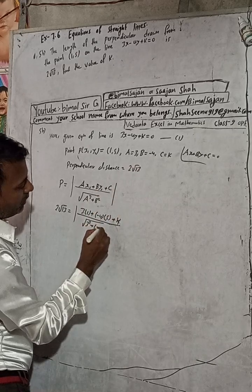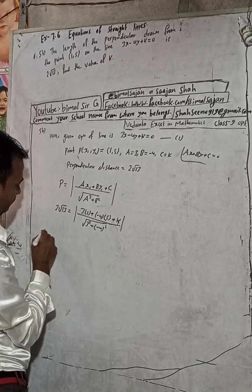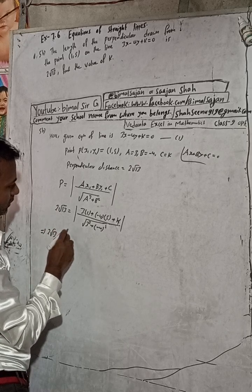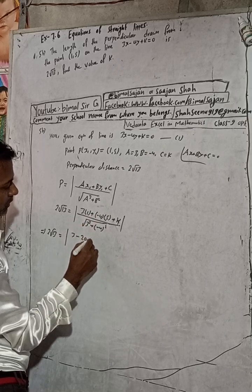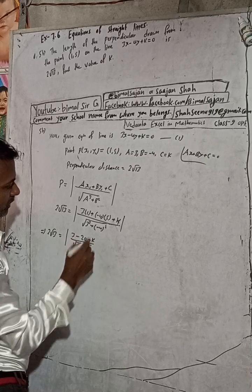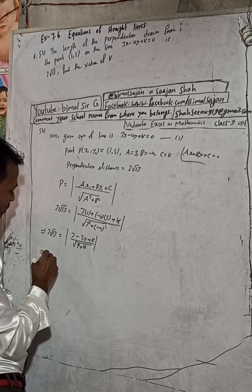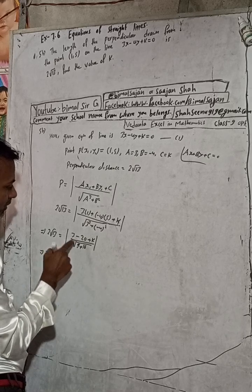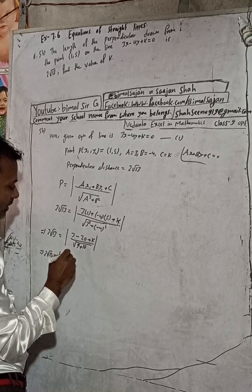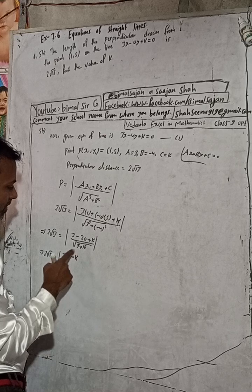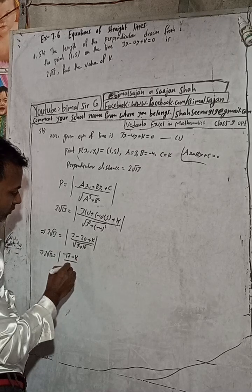When you solve this: 2√13 equals the modulus of (3 times 1 gives 3, minus 4 times 5 gives minus 20, plus k), divided by the square root of (9 plus 16). That gives the modulus of (3 minus 20 plus k) over the square root of 25. Since √25 equals 5, the denominator is 5.